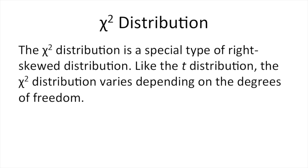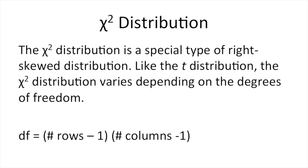The chi-square distribution is a special type of right-skewed distribution. Like the t-distribution, the chi-square distribution varies depending on the degrees of freedom. For a chi-square test of independence, the degrees of freedom are equal to the number of rows minus one times the number of columns minus one.